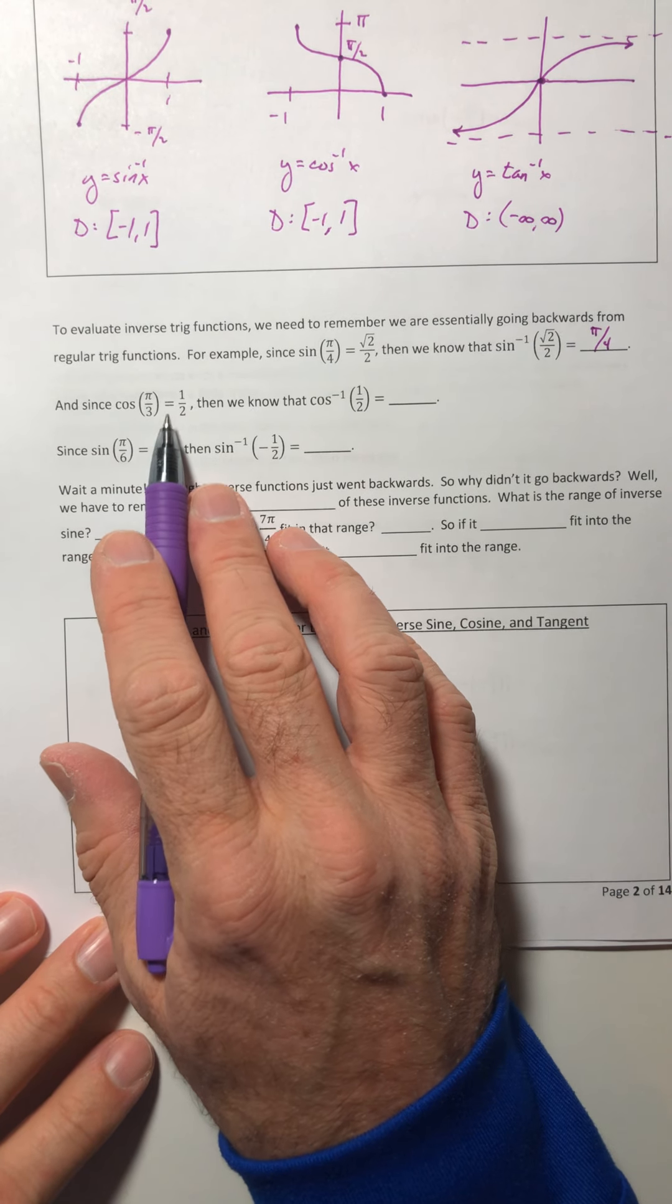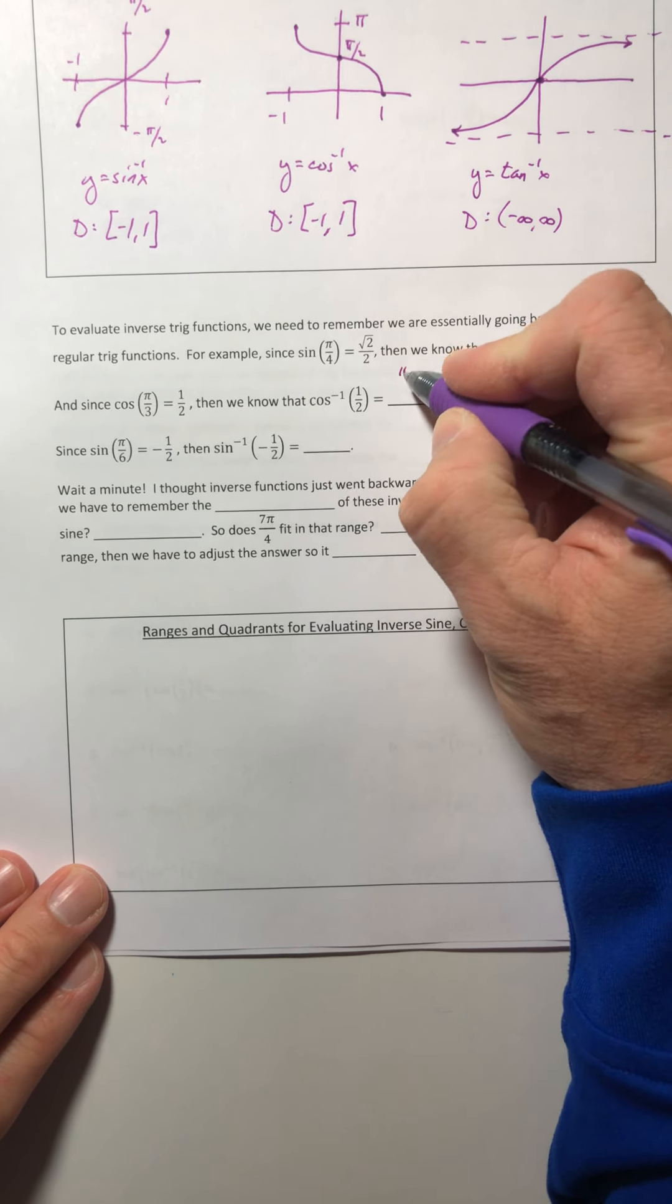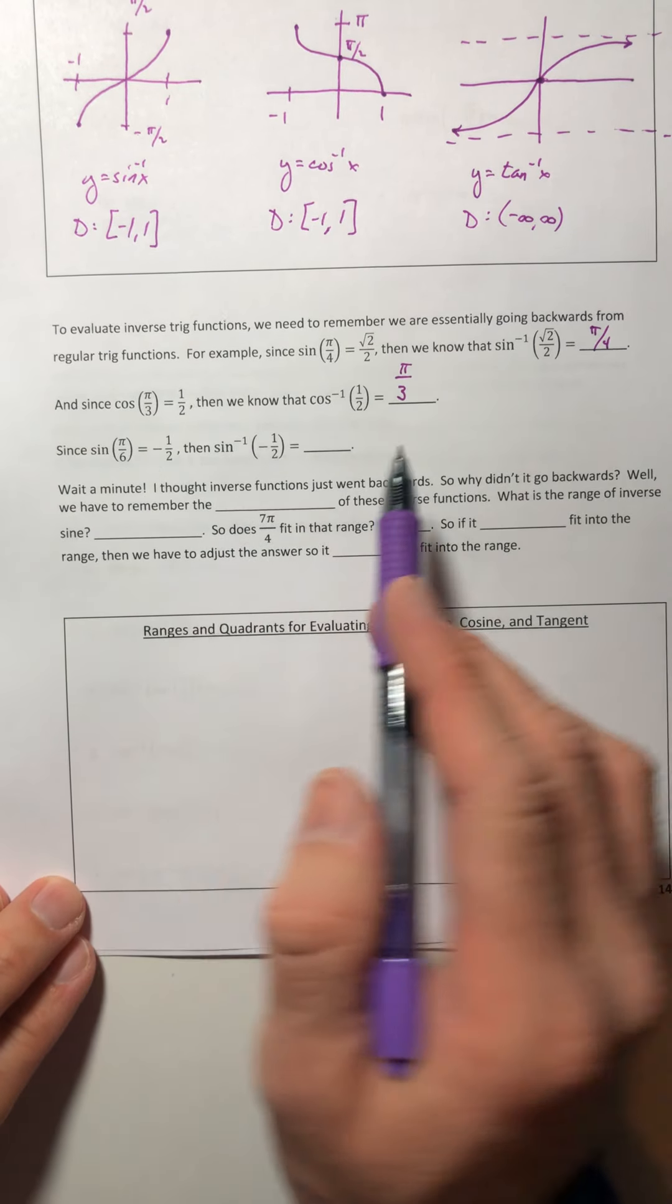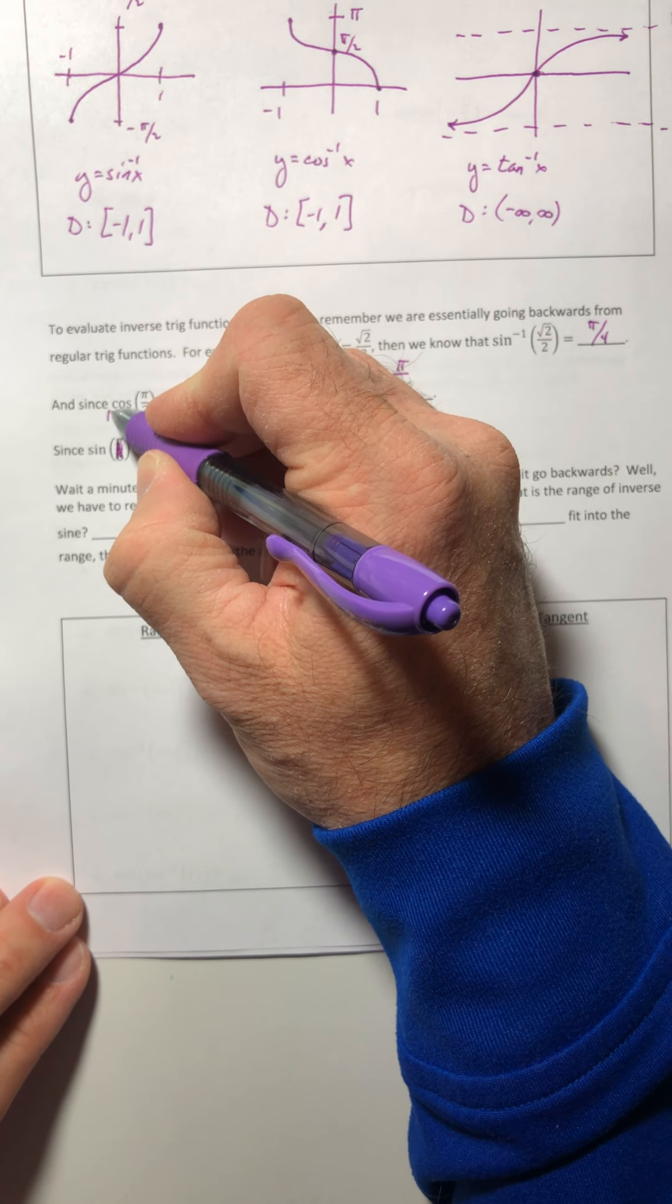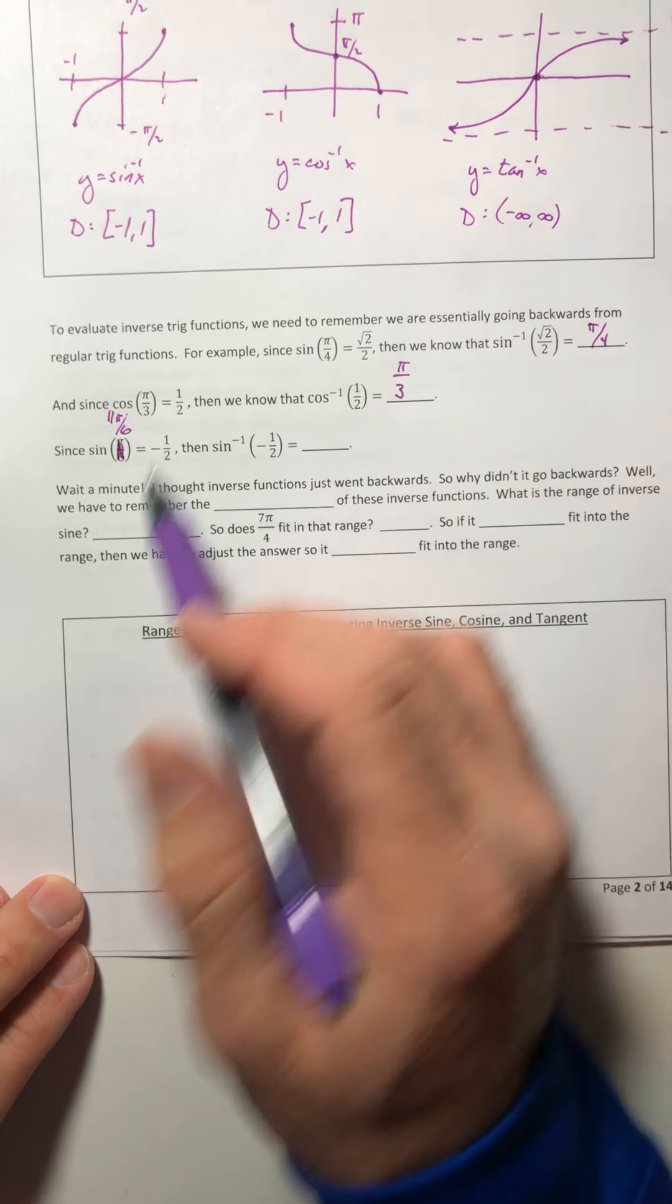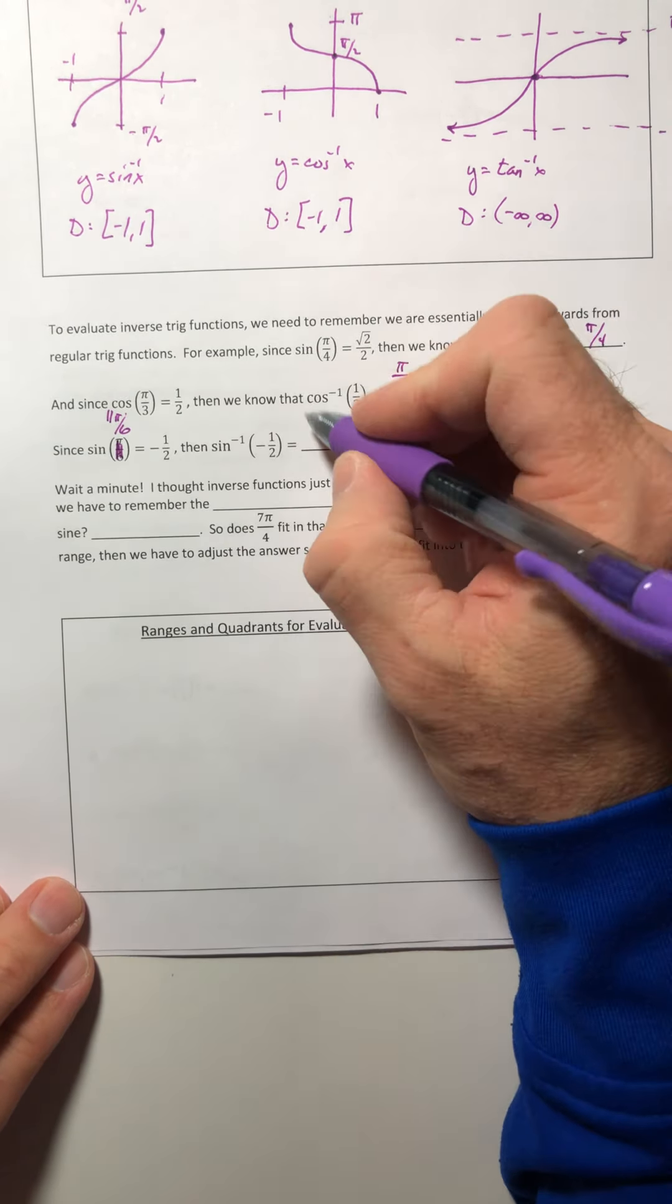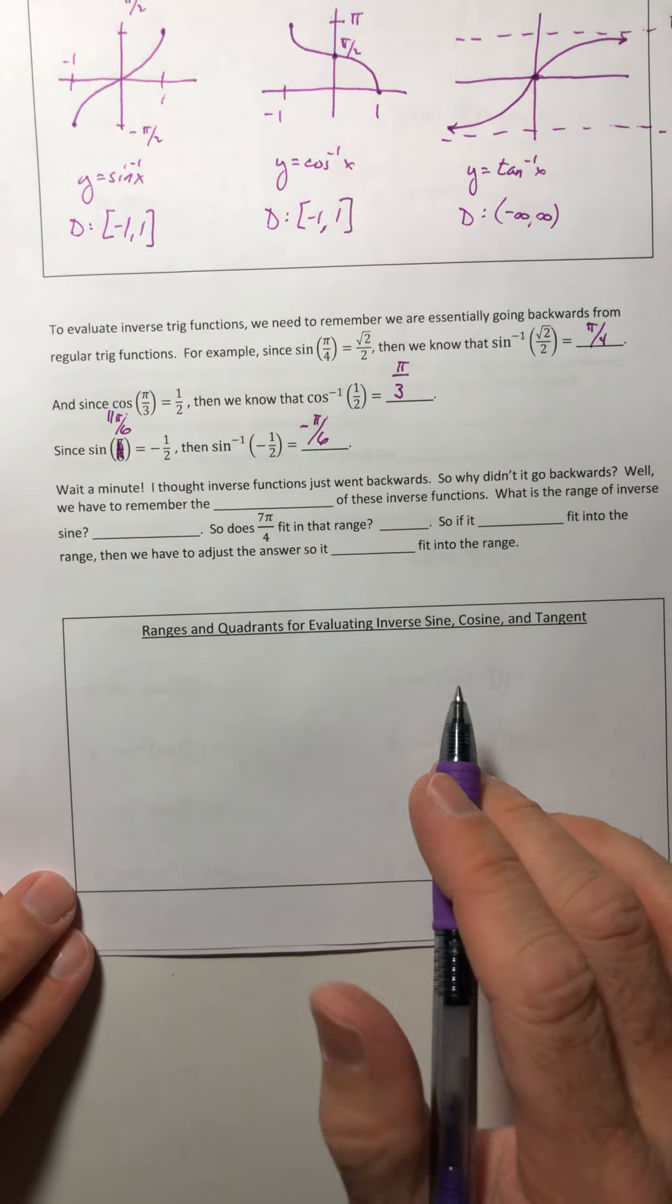Since cosine of π over 3 equals a half, then we know that inverse cosine of a half equals π over 3. Okay, now there's a little typo in this. That should be, instead of π over 6, that should be 11π over 6. I don't know how I missed the 11, but I did. So since sine of 11π over 6 equals a negative half, then inverse sine of negative half is going to equal negative π over 6.